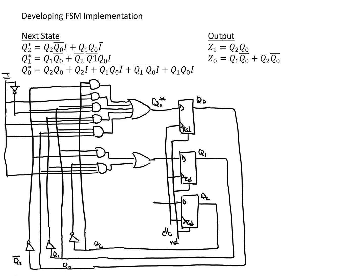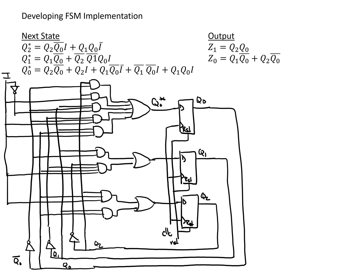We need to do the same thing for Q2. Again, we've got two terms. For the first one, we need Q2, Q̄0, and I. For the second term, we need Q1, Q0, and Ī. That takes care of all of our next state logic.